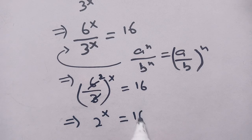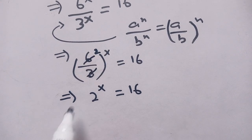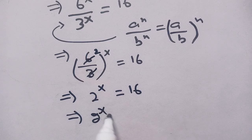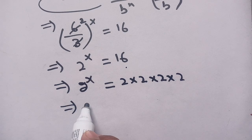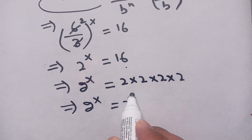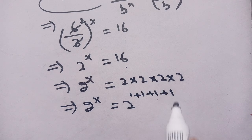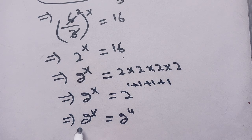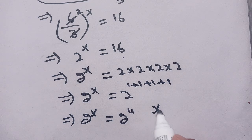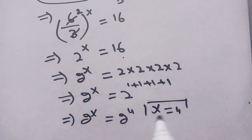In the next step, 2^x = 16 can be broken down in terms of powers of 2. We can write 16 as 2^4, so 2^x = 2^4, which gives x = 4. This is the required value of x which satisfies our given exponential equation.